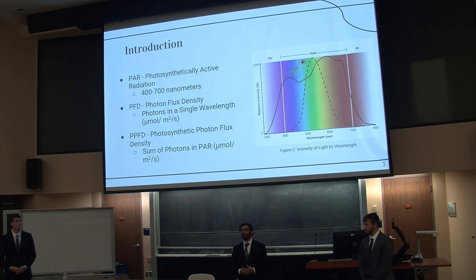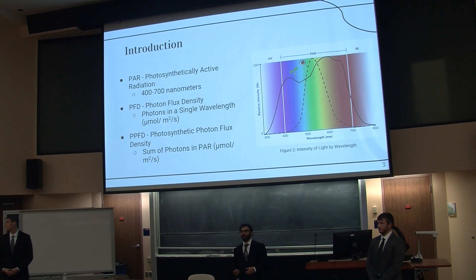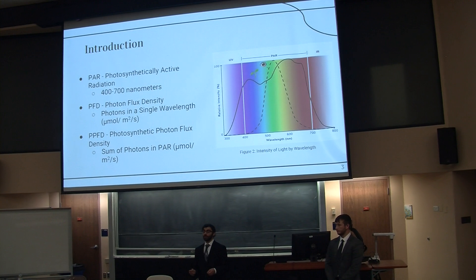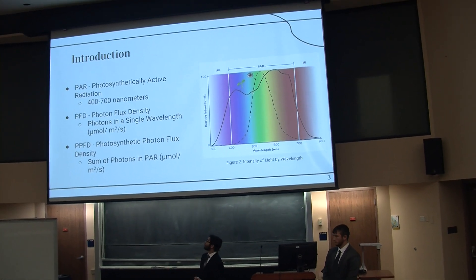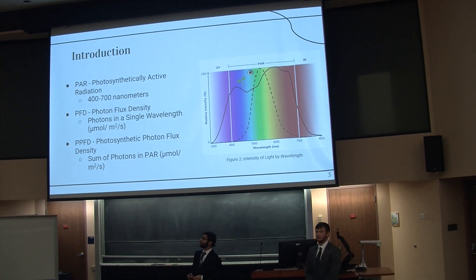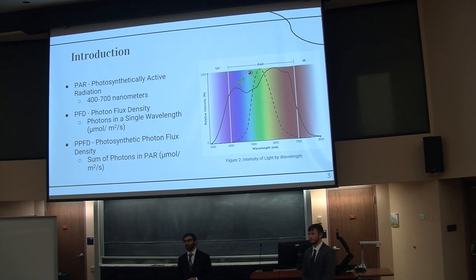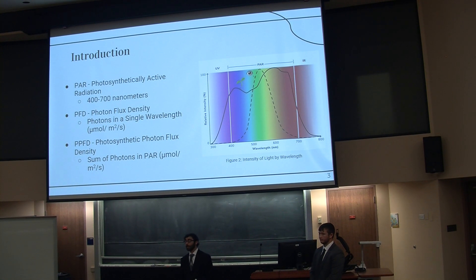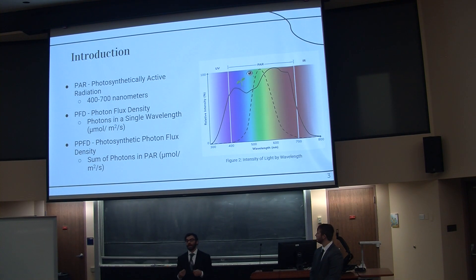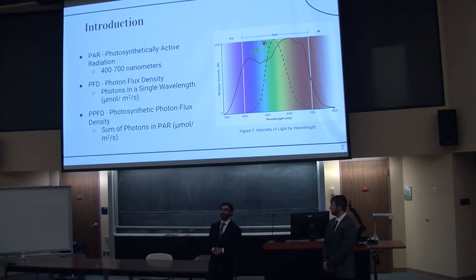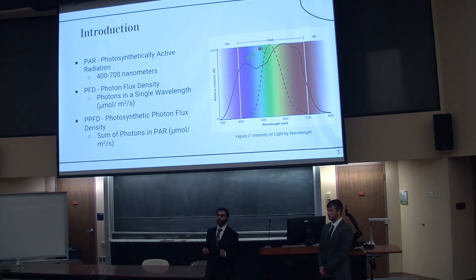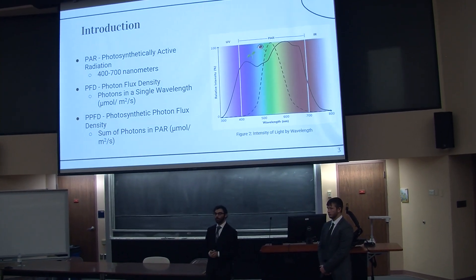Throughout our presentation, we're going to be using some familiar terminology. This mostly comprises light. The first of which is PAR, photosynthetically active radiation. This is light between 400 and 700 nanometers. As you can see from the graph, that's essentially what we as people can see as light. Plants are a bit more sensitive to this, so it's very important to make sure we're working within this range.